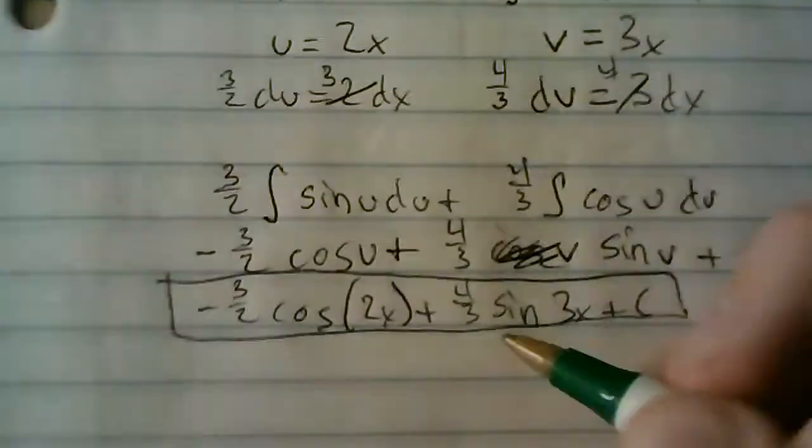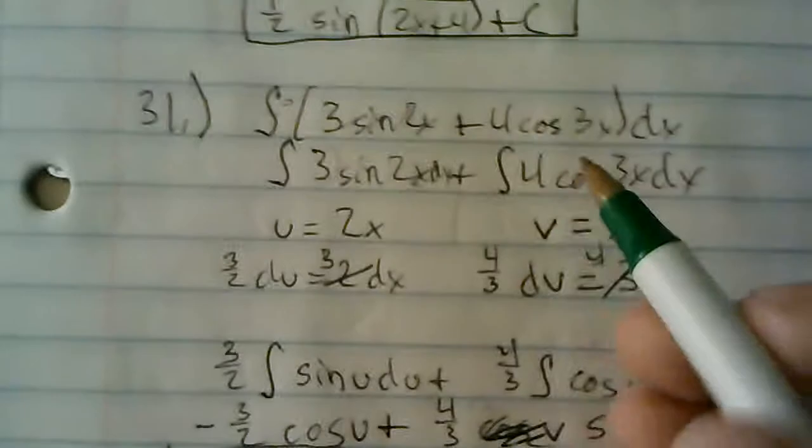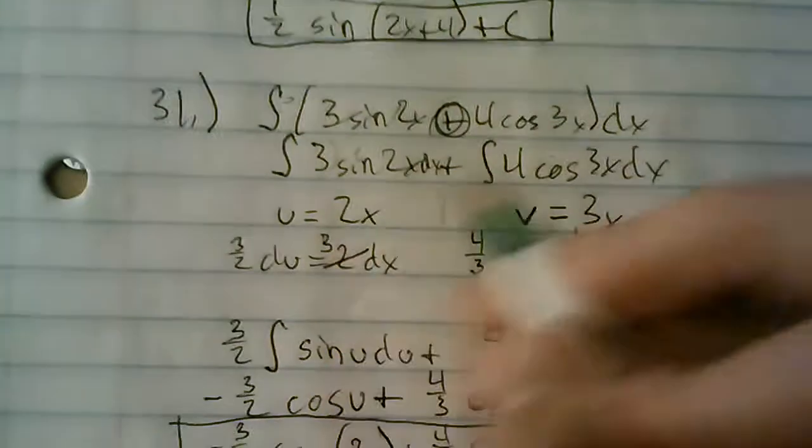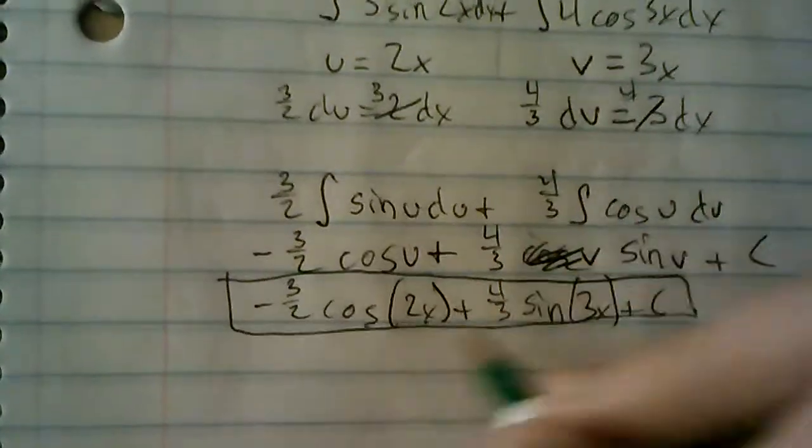So, it's pretty straightforward stuff. You know, you just find your u values. But the important part is that when you have this plus sign right here, you can split up these two terms, integrate them separately, and then combine them at the end.